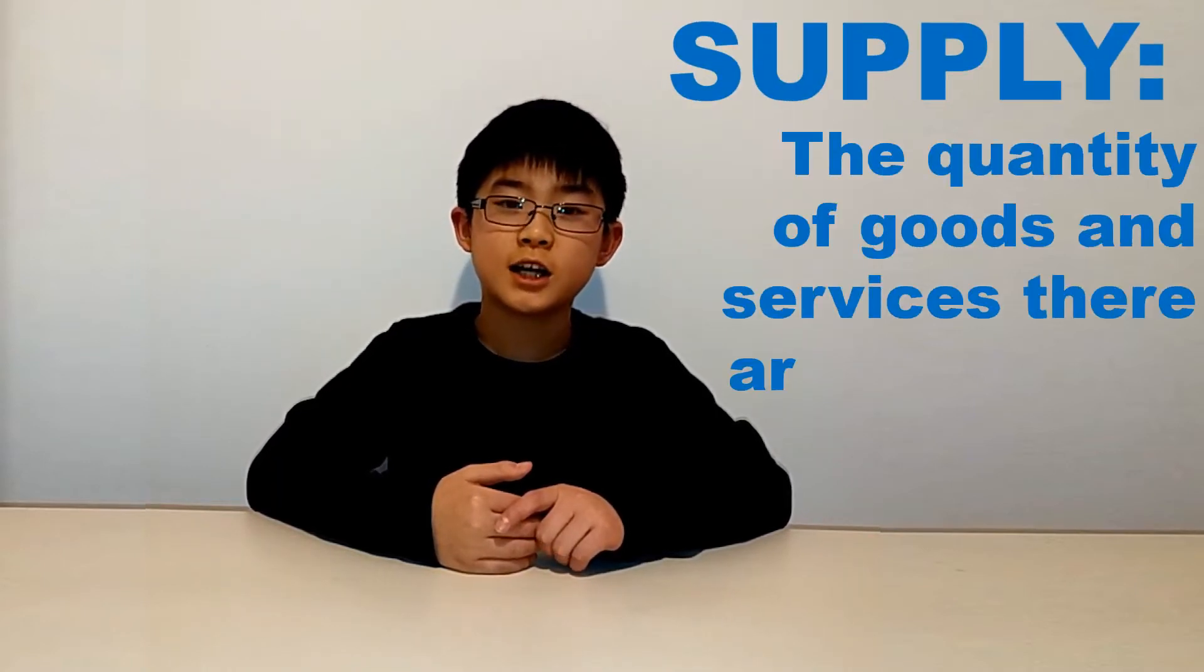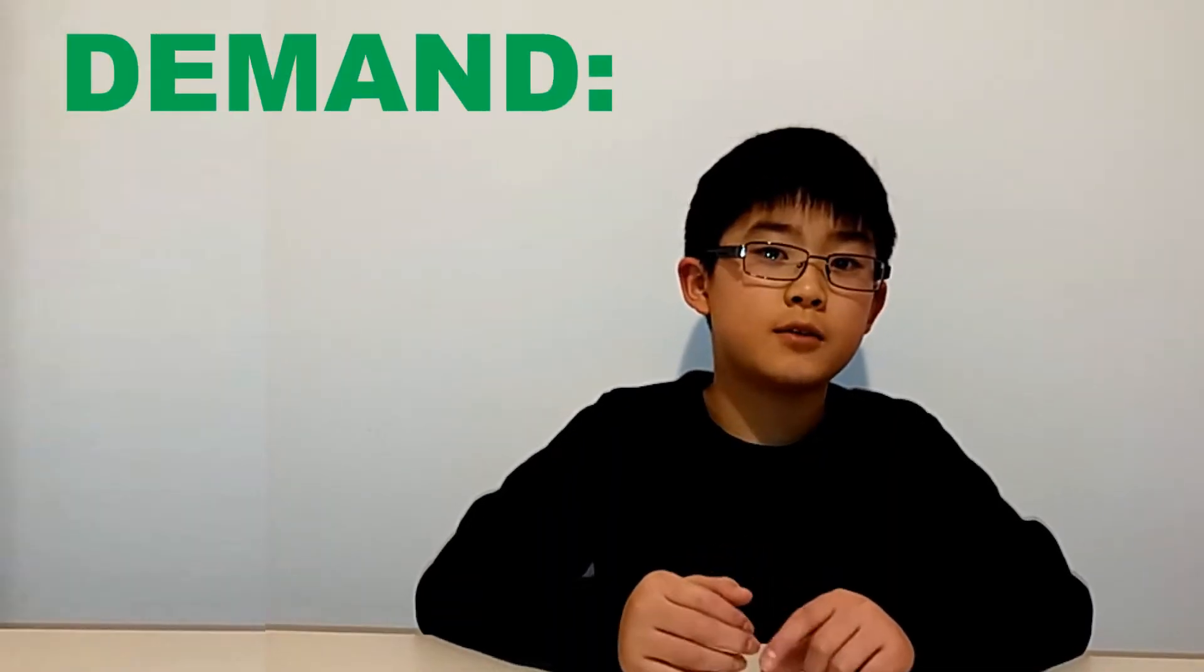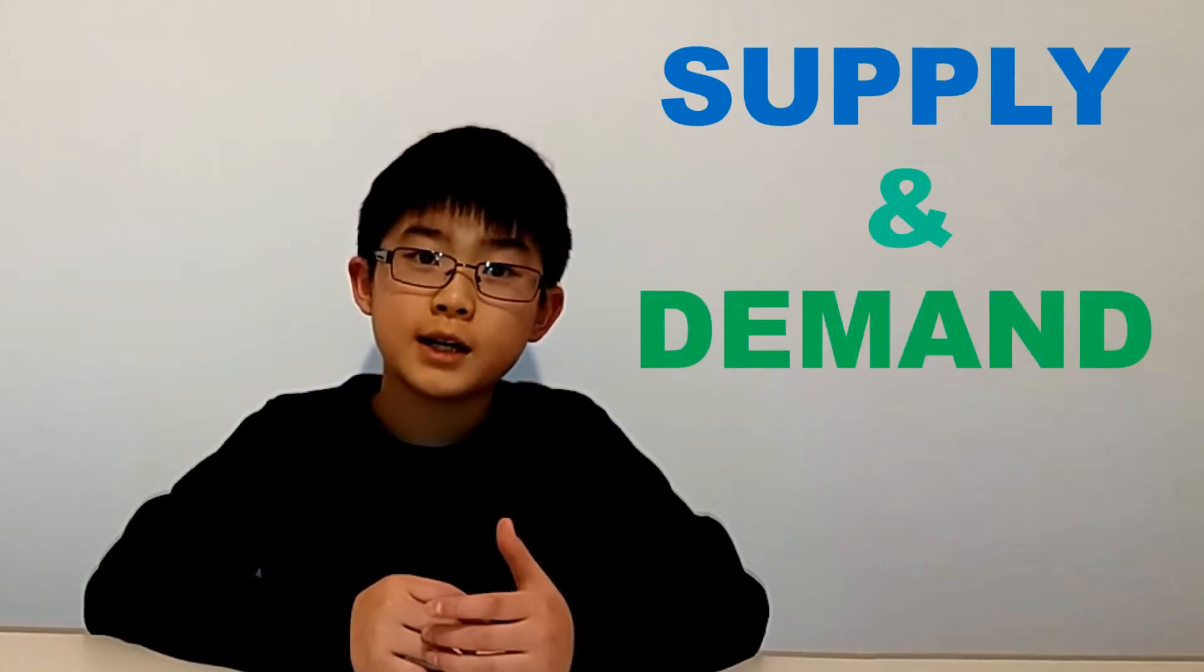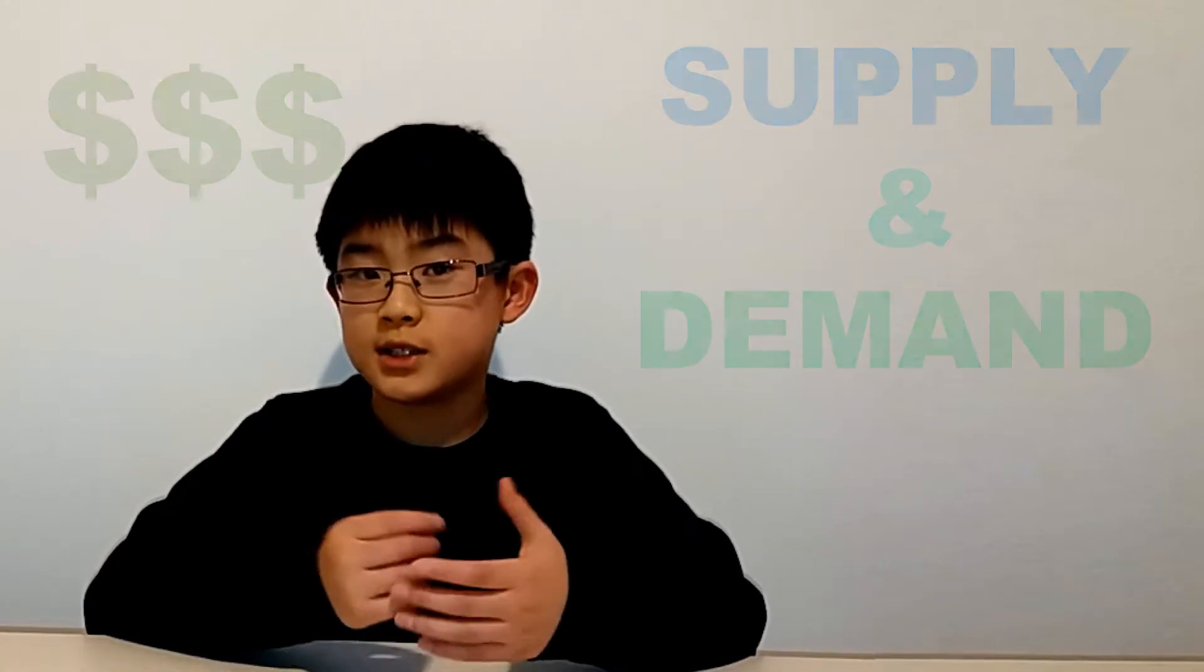Supply is the amount of goods and services that are in circulation or being produced, and Demand is the amount of those goods and services that people want or demand. Supply and Demand also affect the price, so it's very useful for companies to work out the right price to maximize their profits.